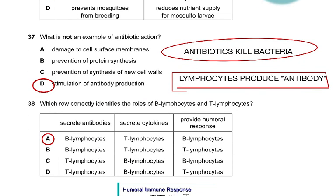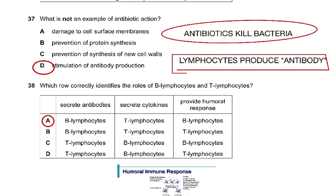Question 37: What is NOT an example of antibiotic action? Options are: damage to cell surface membranes; prevention of protein synthesis; prevention of synthesis of new cell walls; and stimulation of antibody production. Antibiotics kill bacteria — they damage bacterial cell membranes, prevent protein synthesis in bacteria, and prevent synthesis of new cell walls in bacteria. However, antibiotics do not stimulate antibody production. Lymphocytes produce antibodies in response to antigenic exposure, which is a separate process.